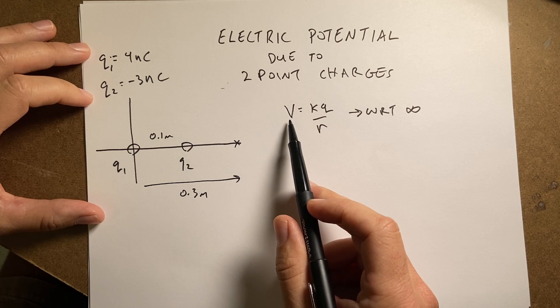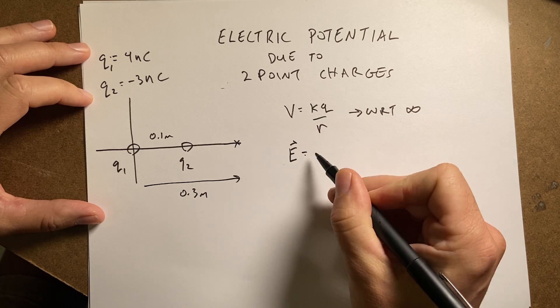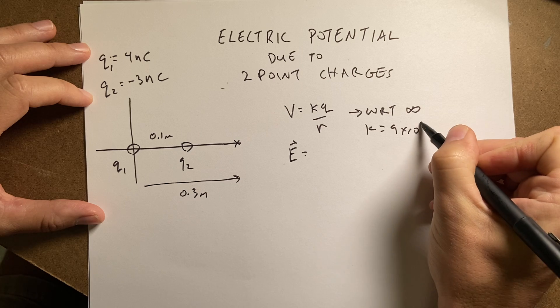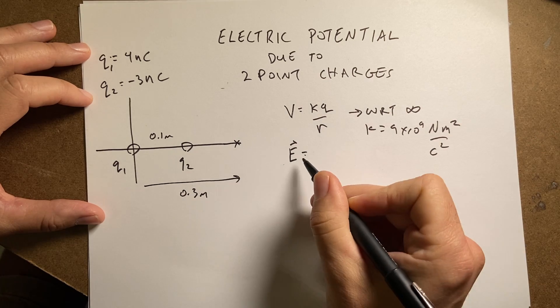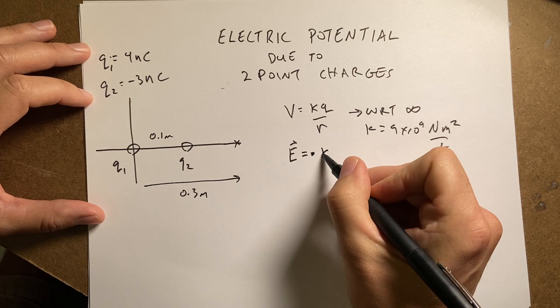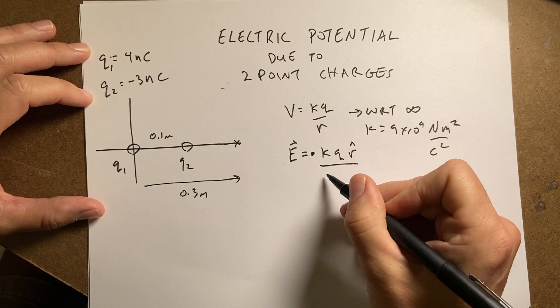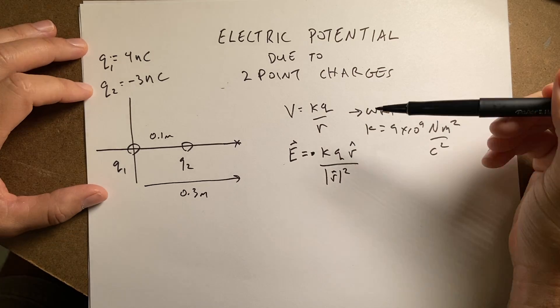So let's just compare this real quickly to the electric field due to a point charge, where K is equal to 9 times 10 to the 9th newtons meters squared per coulomb squared. So the electric field is equal to KQ R hat over the magnitude of R squared. So there's two really big differences here.